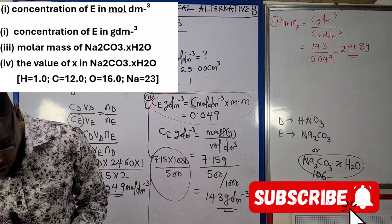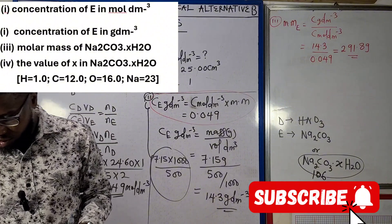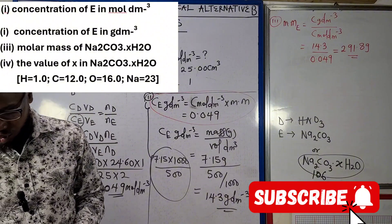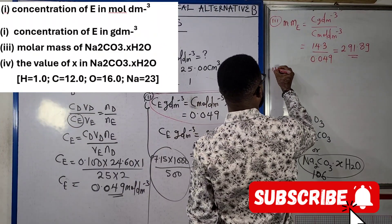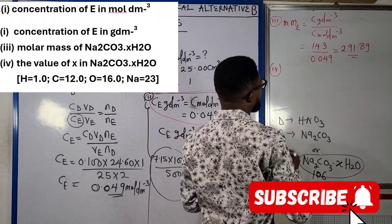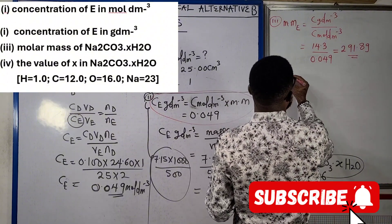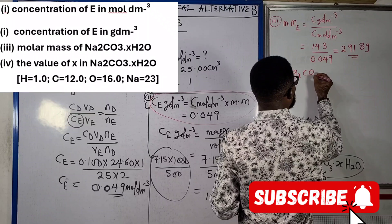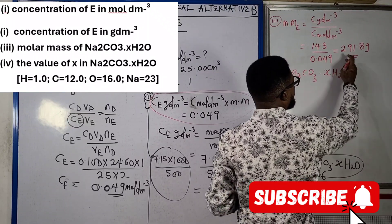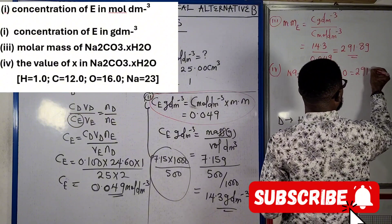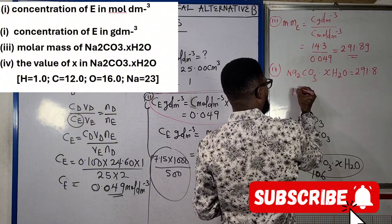In question four, we're taught to look for the value of x in sodium carbonate dot xH2O. It means that Na2CO3·xH2O everything equals 291.8.